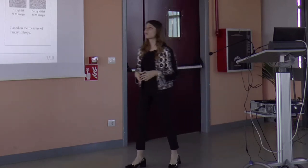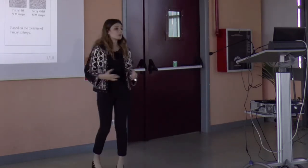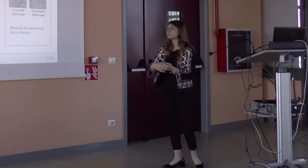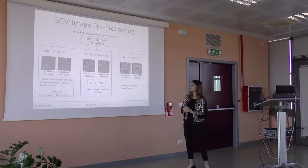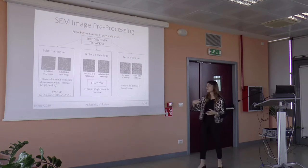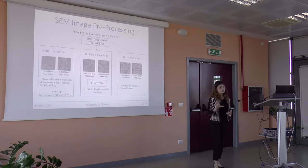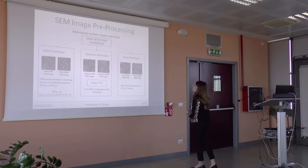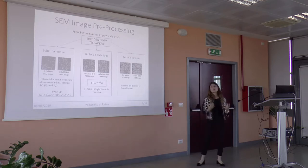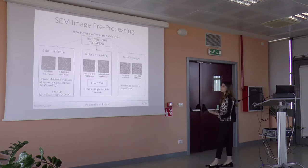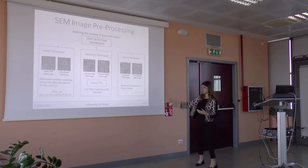The second section of the framework is the pre-processing. To make the classification task easier, the images have been pre-processed by reducing the number of grayscale levels while maintaining the texture of each image. This is achieved through edge detection techniques, and in particular the Sobel technique, the Laplacian technique, and the Fuzzy technique.